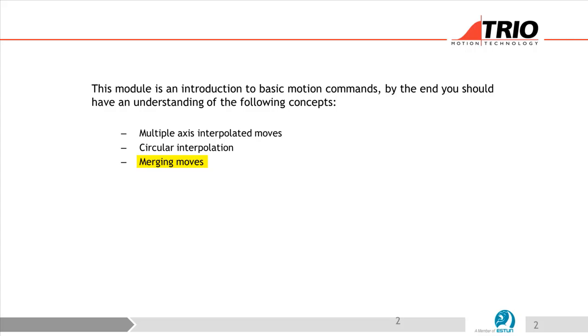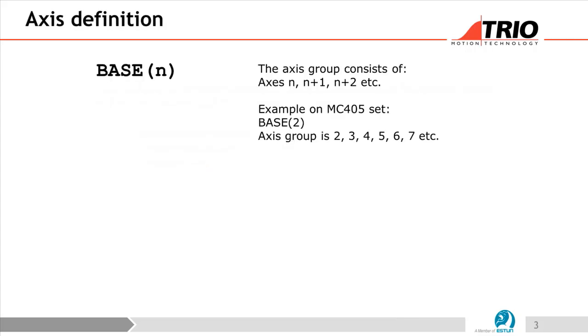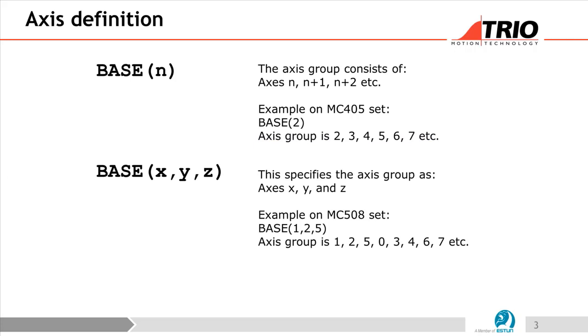Axis definition in Trio Basic. You have BASE and the number behind this basically tells you what is the axis number. It goes like n, n+1, n+2, etc. Example: if you call BASE(2), the axis group will be 2, 3, 4, 5, 6, 7, etc.